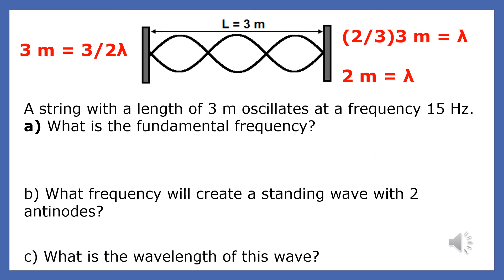A string with a length of 3 meters oscillates at a frequency of 15 Hz. What is the fundamental frequency? Since there are three antinodes shown here, this is the third harmonic. If the third harmonic has a frequency of 15 Hz, the fundamental must have a frequency of 5 Hz.